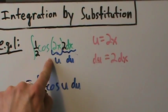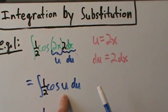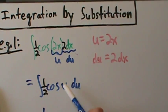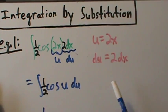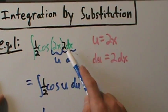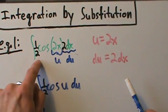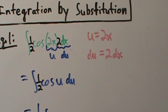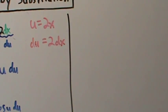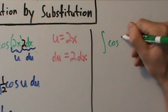If u is 2x, then du is 2 dx. I don't have 2 dx, I just have dx. So I stuck a 2 in there, multiplied everything by 2, and then divided by 2. Let's go through this example again, thinking about it a slightly different way. Same substitution: let u be 2x. For the substitution, what you're looking for in general is a function and its derivative, or a function and a constant multiple of its derivative.